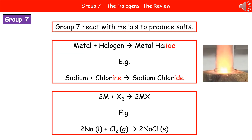When group 7 reacts with metals, they produce a salt. A common example is sodium and chlorine making sodium chloride - table salt. The key thing is the endings: the halogen on its own ends in -ine, but when joined to a metal it becomes a halide, ending in -ide. So sodium plus chlorine (-ine) makes sodium chloride (-ide). Don't write 'sodium chlorine' as the product or you won't get the marks.